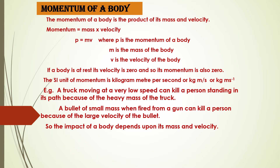Let us now understand what the momentum of a body is. Momentum of a body is defined as the product of mass and velocity. Momentum is written as mass into velocity, which can be written in abbreviated form as p = m × v, where p is momentum of a body, m is mass of the body, and v is velocity of the body.